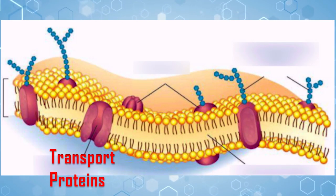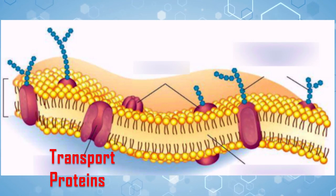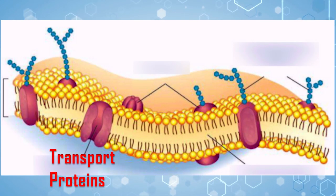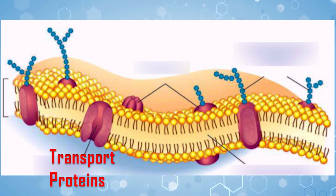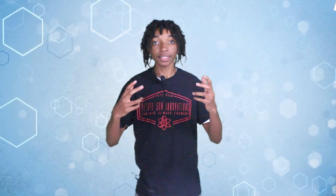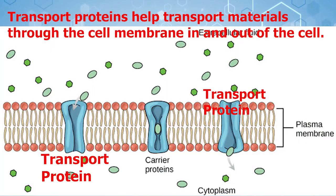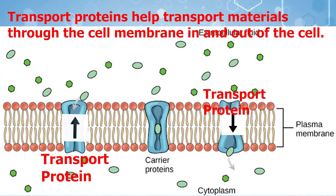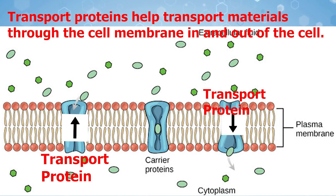Proteins called transport proteins go all the way through the phospholipid bilayer, or cell membrane. They help transport materials through the cell membrane, in and out of the cell.